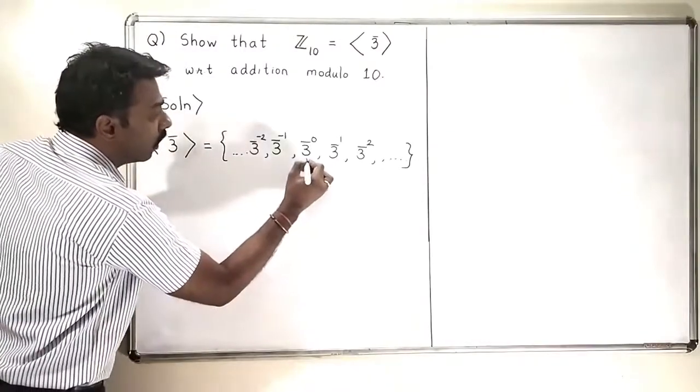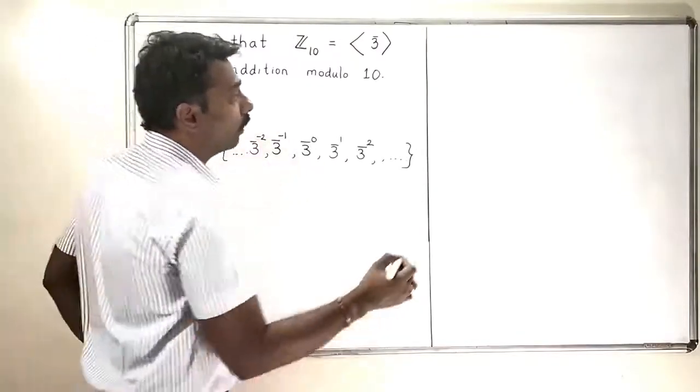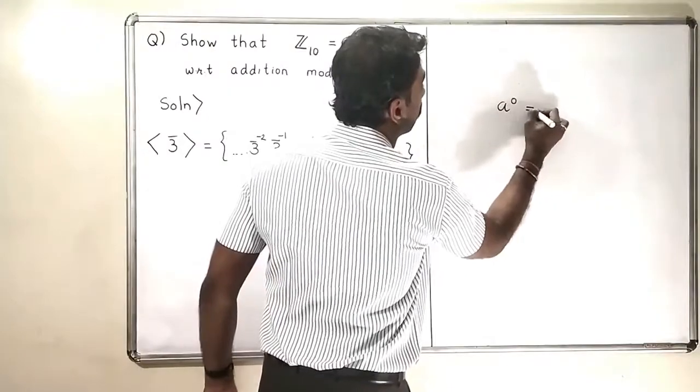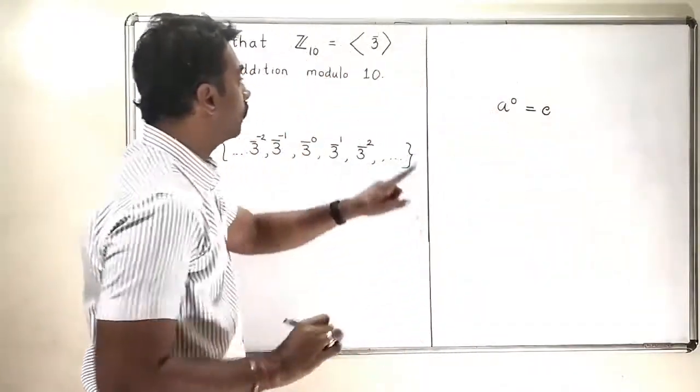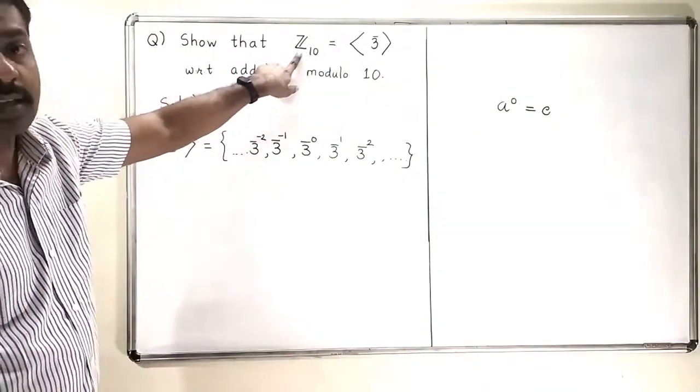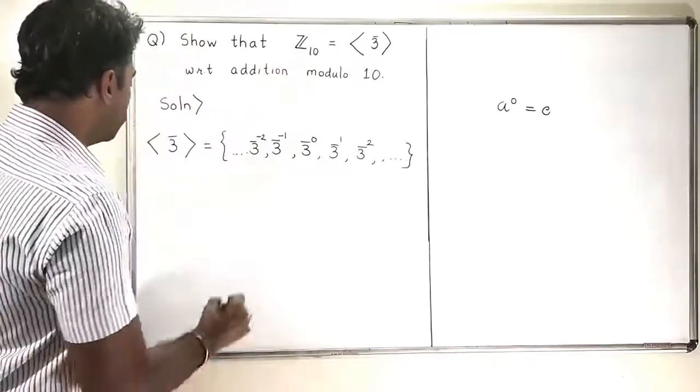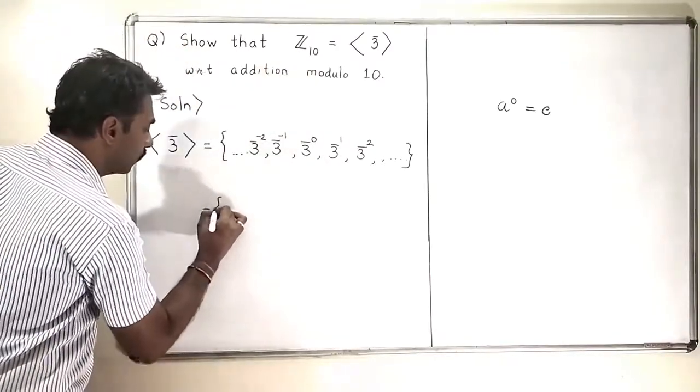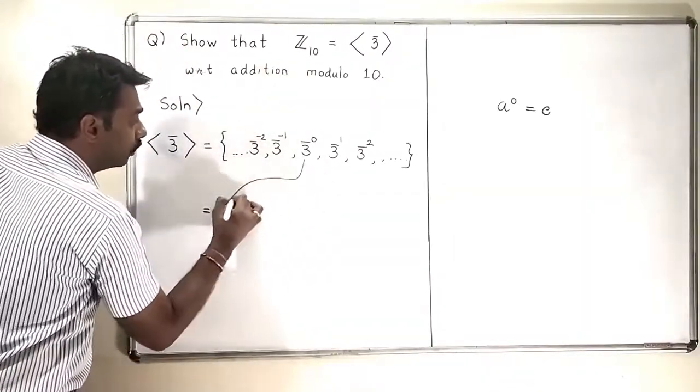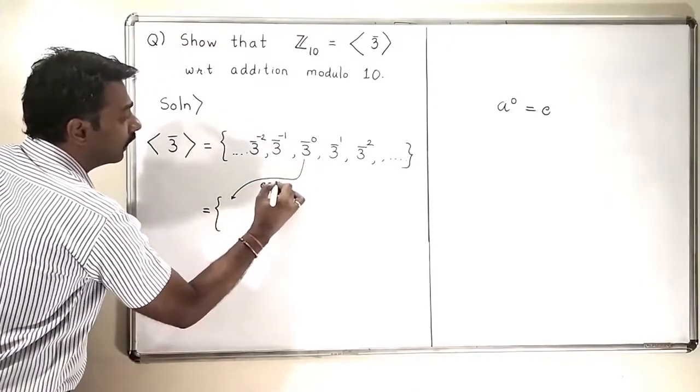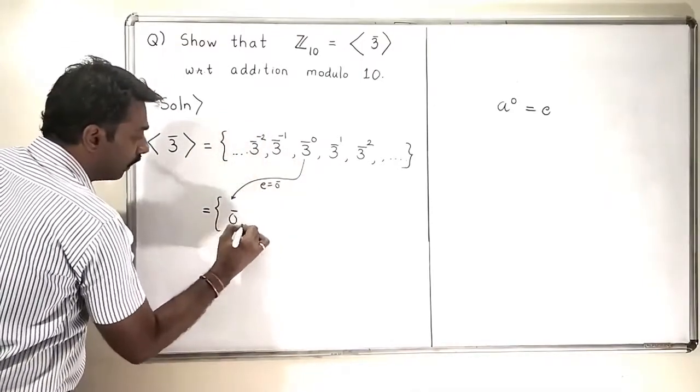So let me write what is 3 bar raised to 0 bar. Now in group theory, we know we have a theorem that A bar raised to 0 is equal to identity. Who is the identity of the group Z₁₀? 0 bar is the identity of Z₁₀. So 3 bar raised to 0 bar is identity, which is 0 bar.